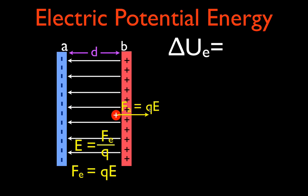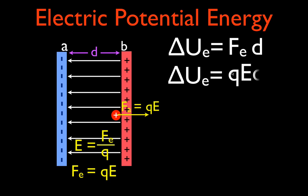So if we want to change the potential energy, we apply a force over this distance d. We know the electric force is equal to QE, so the change in potential energy is also equal to QED. This only applies for parallel plates because the field between the plates through which the object is being moved is uniform. So this equation — ΔPE = QED — we can use only for parallel plates.